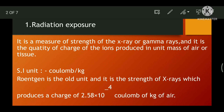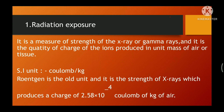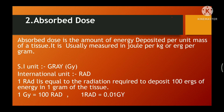Moving towards the unit of radiation exposure: the SI unit is Coulomb per kg. The old international unit is Roentgen.